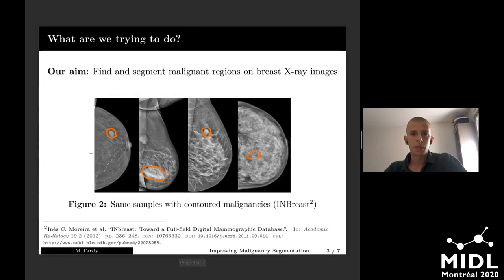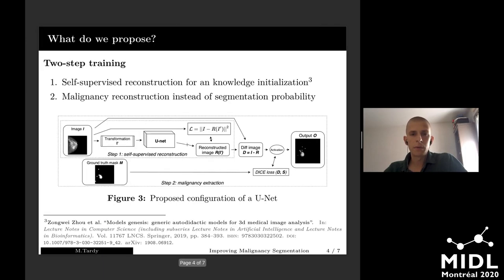Sometimes it can be quite obvious, but usually it's not that simple. To address this problem we propose a two-step approach, which first involves self-supervised training, similar to the work of Zhu proposed at the last MICCAI.